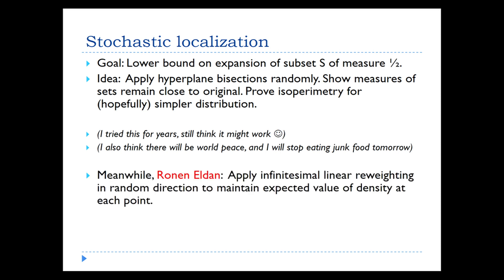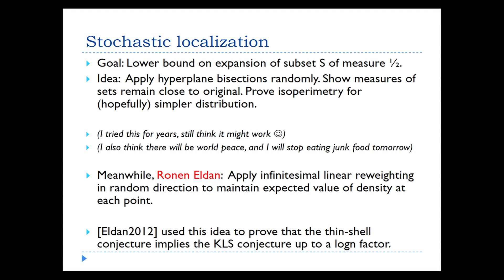Meanwhile, Ronan Eldan came up with the following concrete realization of this approach. Rather than trying to do these discrete half-space cuts, let's apply an infinitesimal linear re-weighting in a random direction. So you pick a random direction and in that direction we're basically going to multiply by a tiny exponential function. We do this repeatedly. And he used this idea to prove that the thin shell conjecture — that most of the volume of an isotropic log-concave density lies in a shell of constant thickness — implies the KLS conjecture up to a log n factor in a universal sense. If you had a universal bound on the thin shell constant, then you get a bound on the KLS constant up to log n.